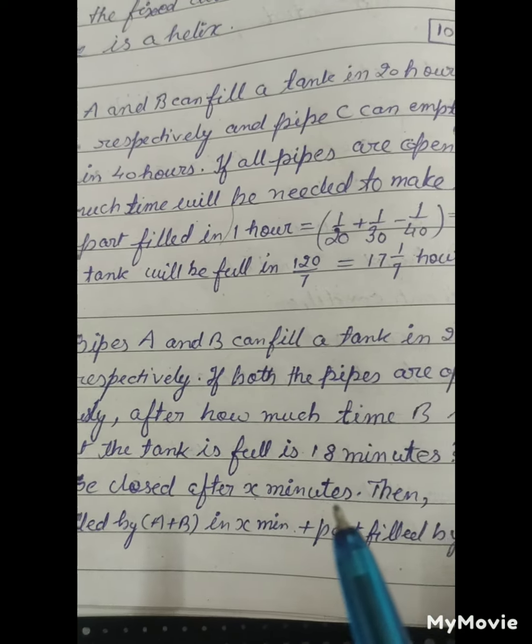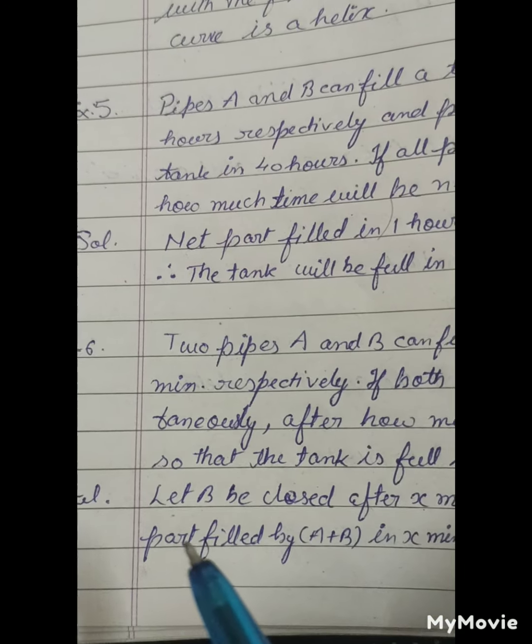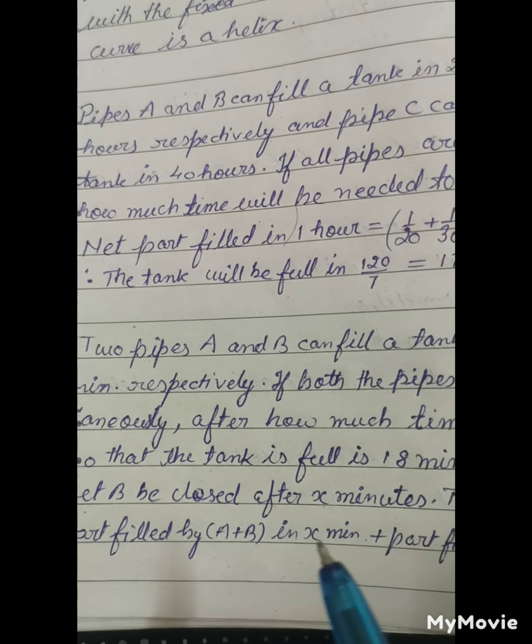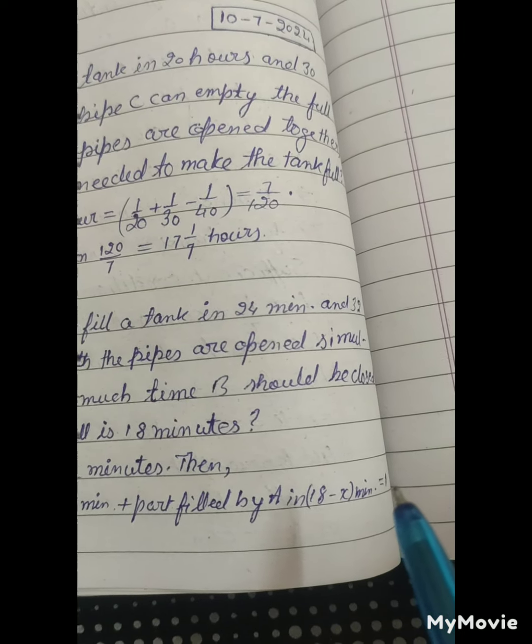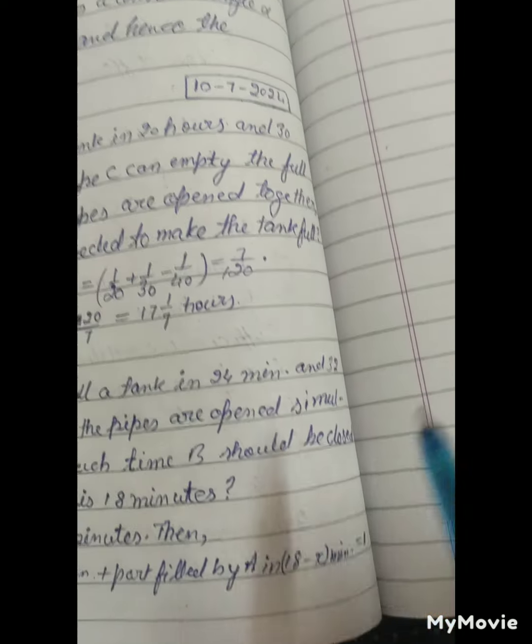Solution: Let B be closed in X minutes. Then part filled by A plus B in X minutes plus part filled by A in 18 minus X minutes equals to 1.